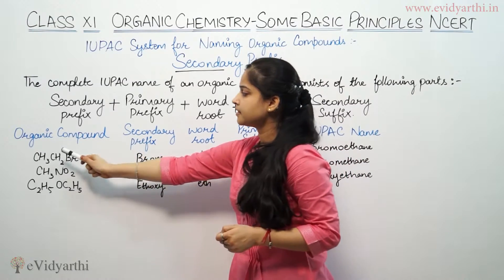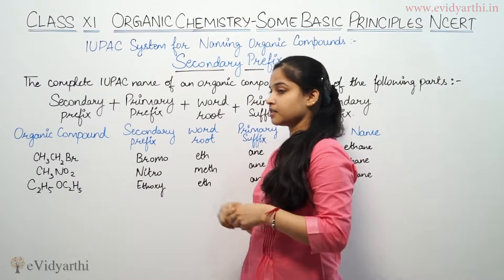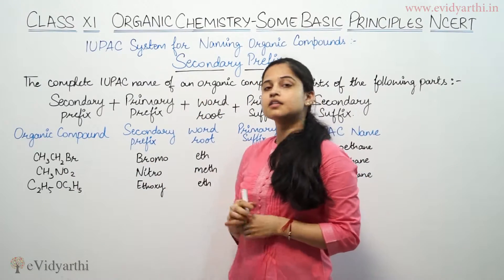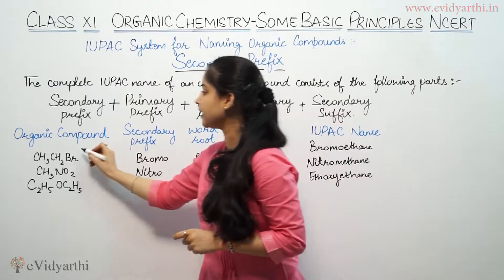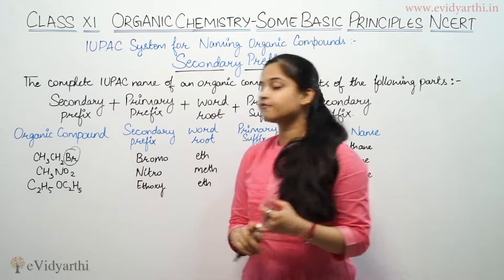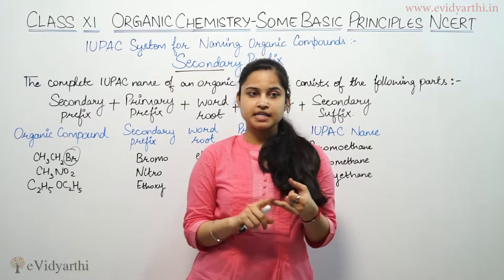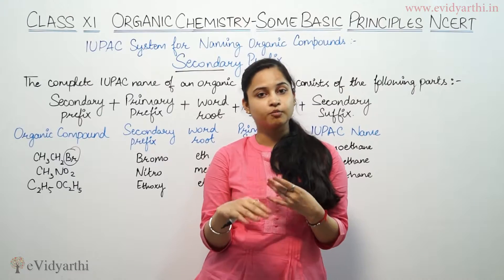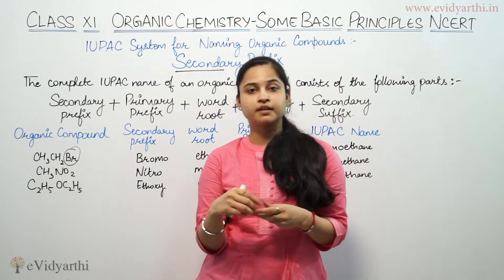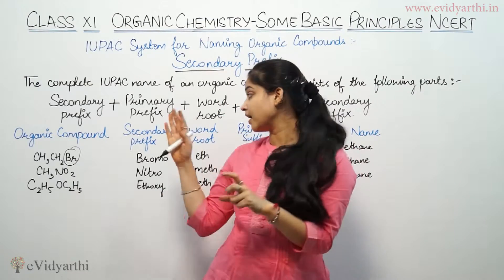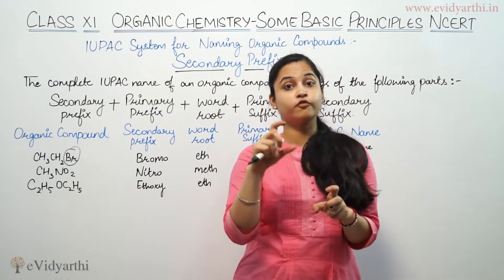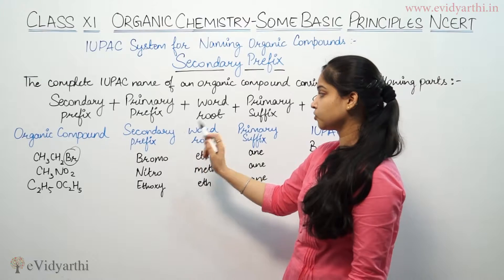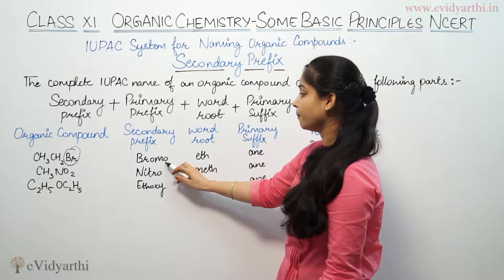First example: CH₃CH₂Br is an organic compound. The secondary prefix contained in this organic compound is Br. Groups like F, Cl, Br are secondary prefixes — that means fluorine, chlorine, bromine are named as fluoro, chloro, bromo respectively. Here my present group is Br, so the secondary prefix is bromo.